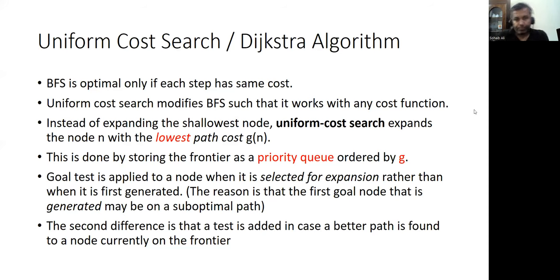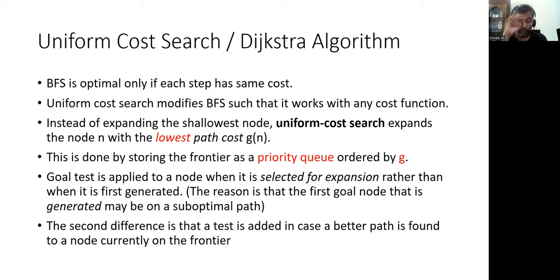Hello everyone. So far we have discussed two searching strategies which were not taking into account the edges associated between two consecutive nodes. Now we are going to discuss an optimal strategy which also takes into account the cost of moving from one node to another. This algorithm is known as Dijkstra, or also uniform cost search in graphs.